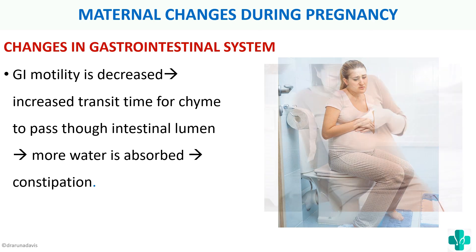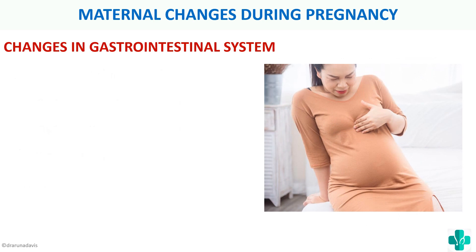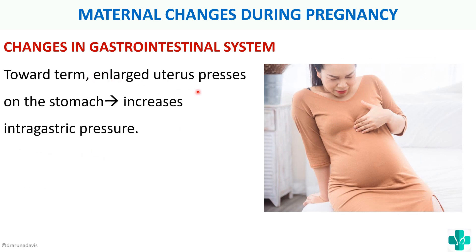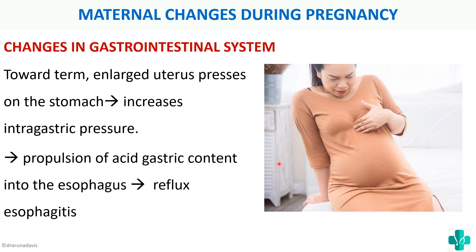Another GI change towards term is that the enlarged uterus starts to press on the stomach, causing increased intra-gastric pressure. This propels acidic contents into the esophagus, causing reflux esophagitis. Heartburn is therefore very common during pregnancy due to the enlarged uterus pressing on the stomach.